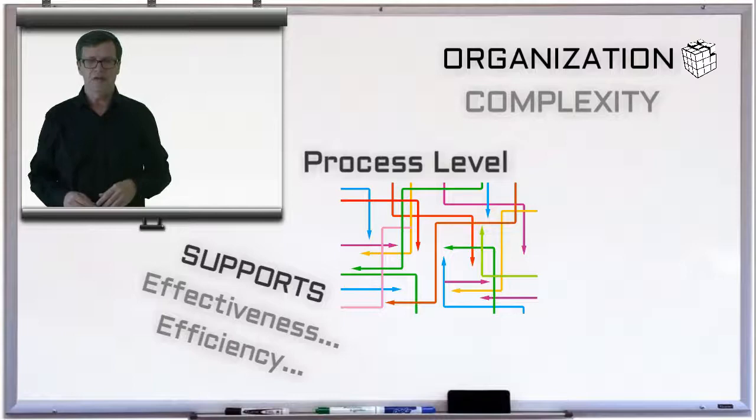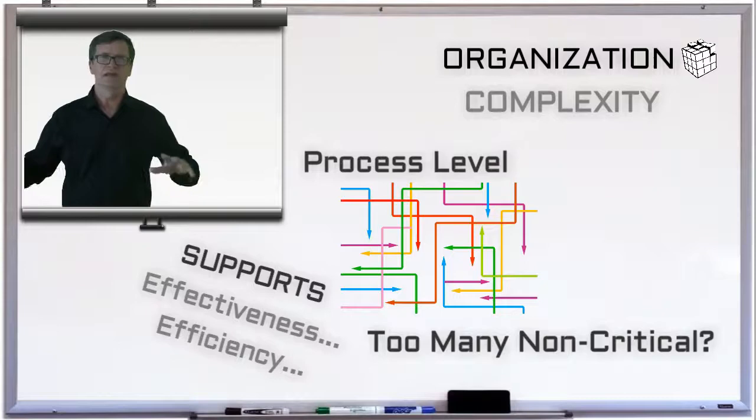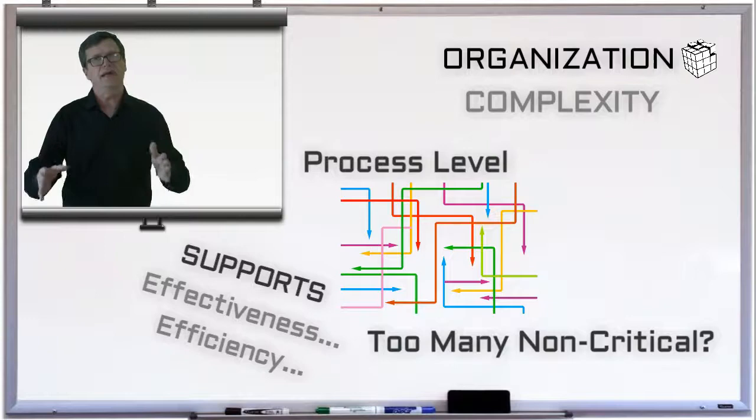And as an example of this form of bad complexity: when a company has too many processes which are not critical to the business and those processes are preventing people from focusing on critical things, the organization has in fact created bad complexity for their business.